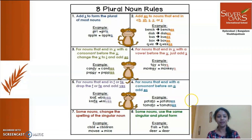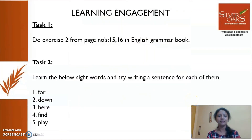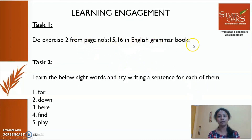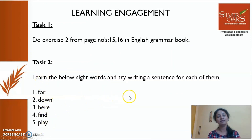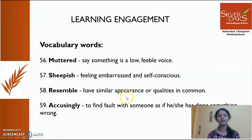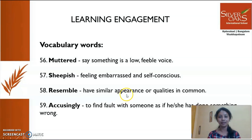Here is your learning engagement task. First, do the exercise from page numbers 15 and 16 in your grammar book. Second, learn all five sets of sight words and write a sentence for each of them. These are the words we have learned today. That's all — bye!